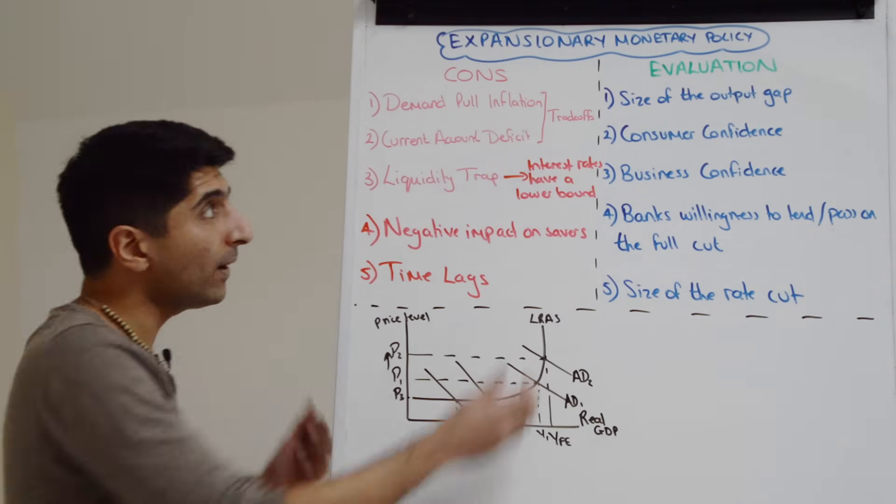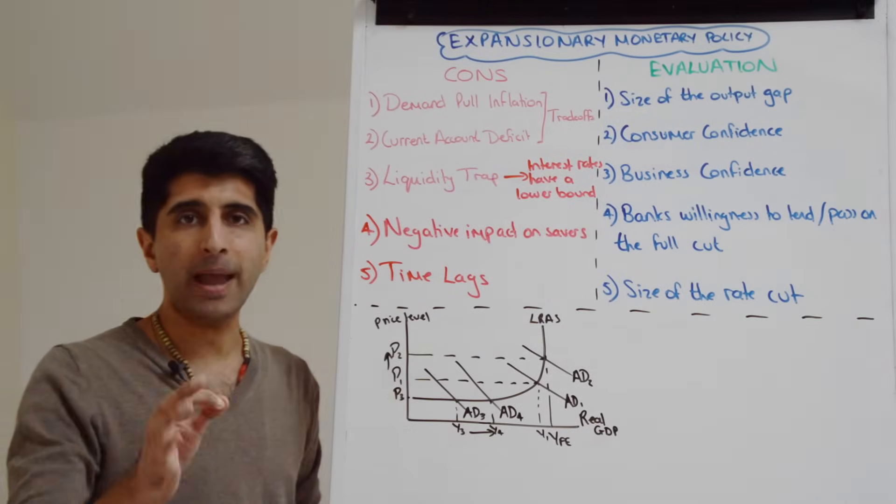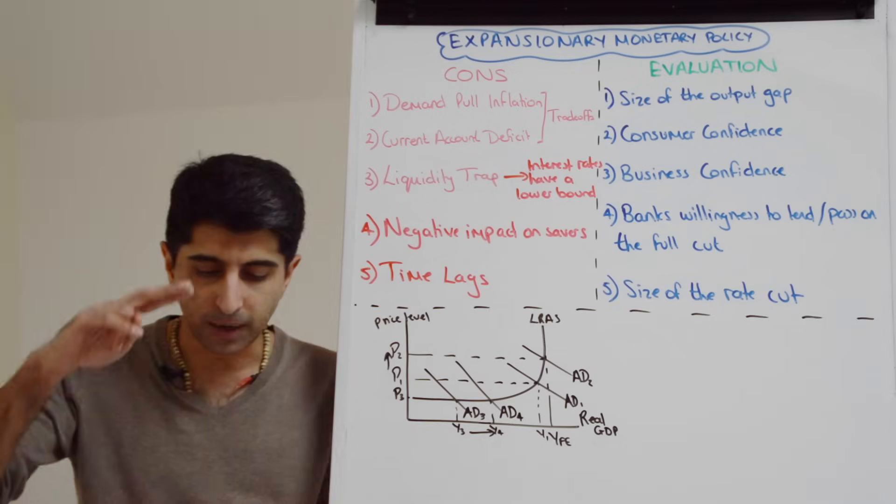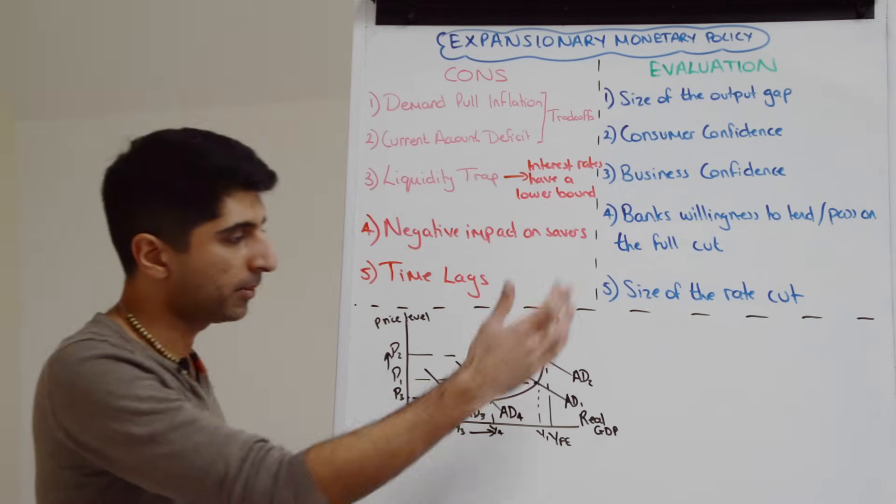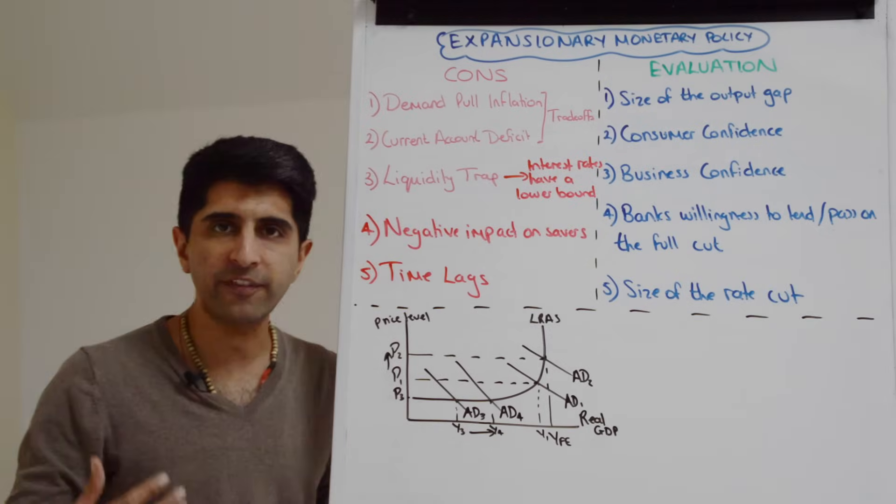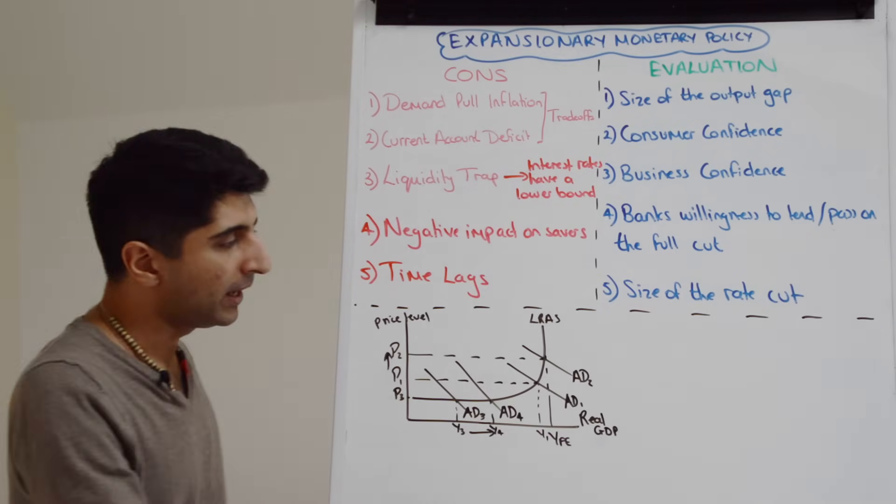Now let's evaluate the effectiveness of expansionary monetary policy. Well the effectiveness very much depends on the size of the output gap. So let's say interest rates are cut to try and promote growth and reduce unemployment in the economy. Well we can use this diagram to help us. We can see that if the economy is already very close to full unemployment with a very small negative output gap,